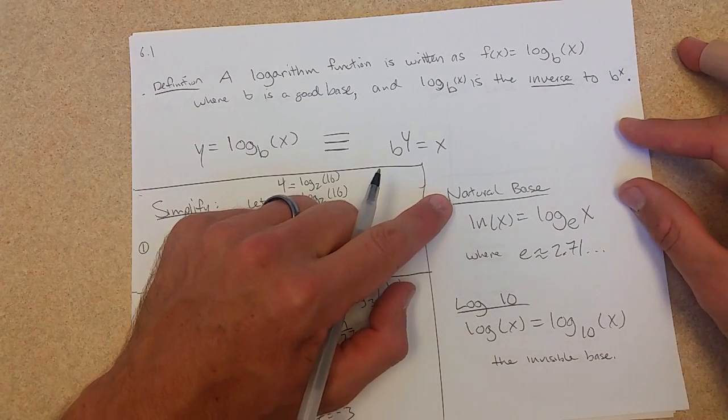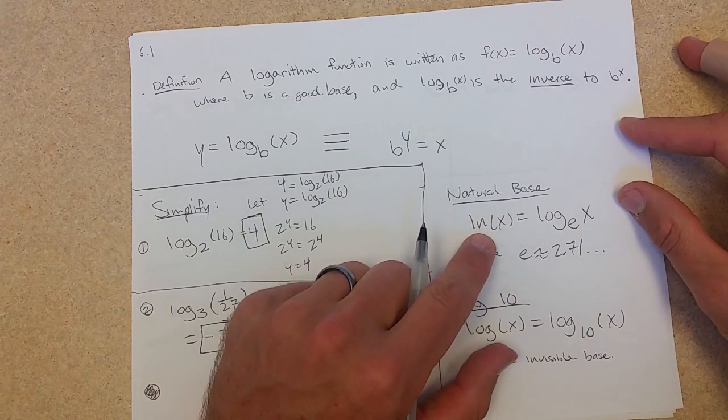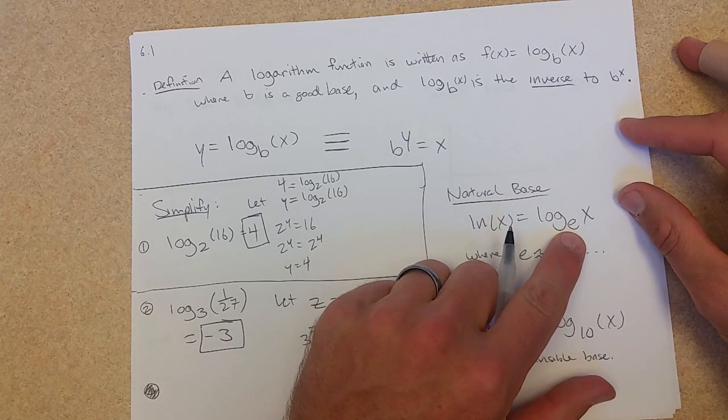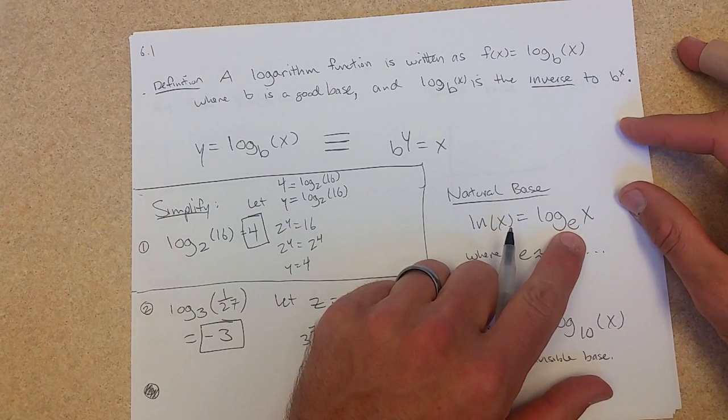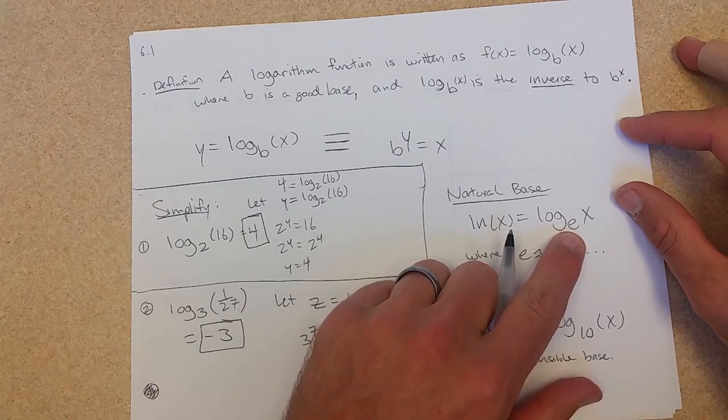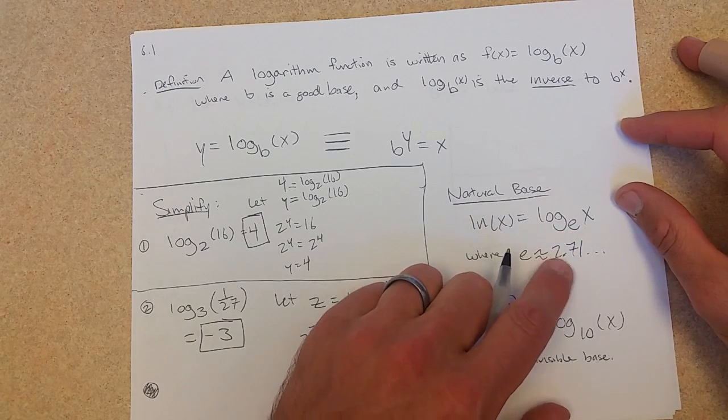There's a natural base. It is written ln, and it means log base e. All I can tell you about e right now is it is an irrational number that is close to 2.71.